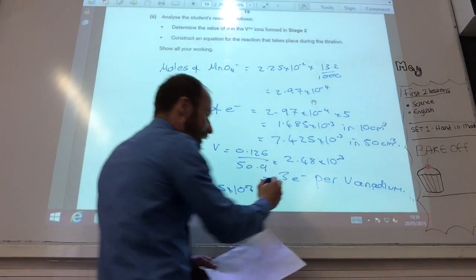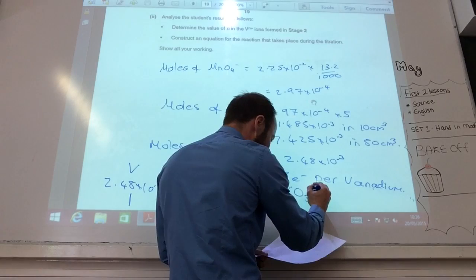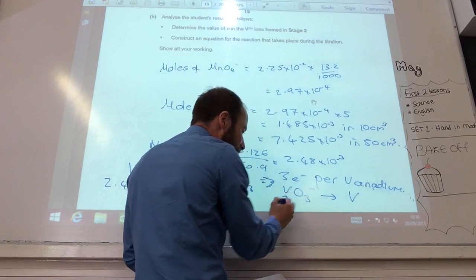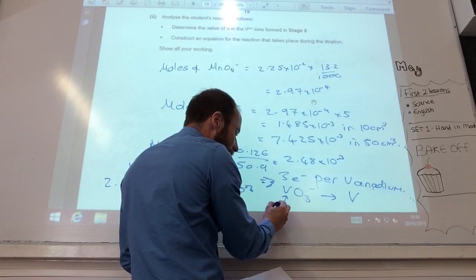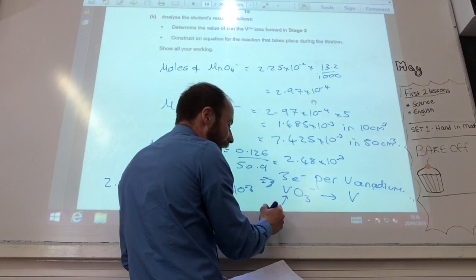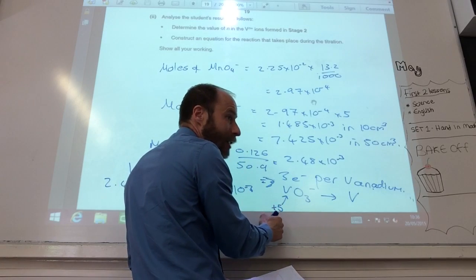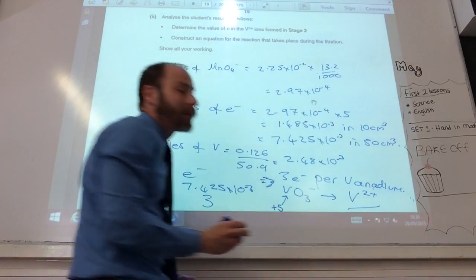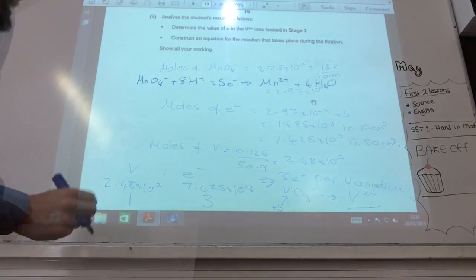Therefore, I started it with it being VO3-. It became... What's the oxidation state of vanadium there? It's plus... If it's gained 3 electrons, it must now be... Plus 2. Plus 2. So, that's what it is.